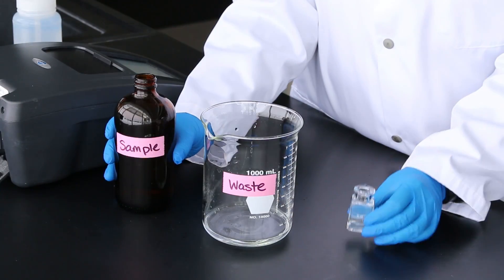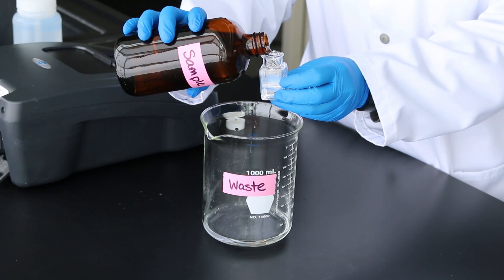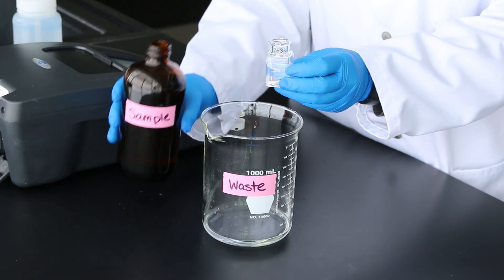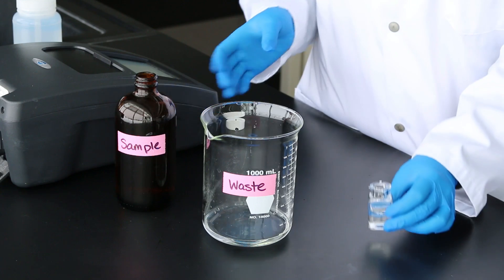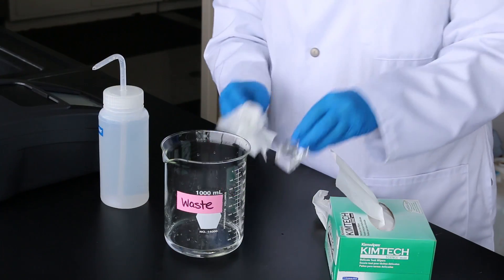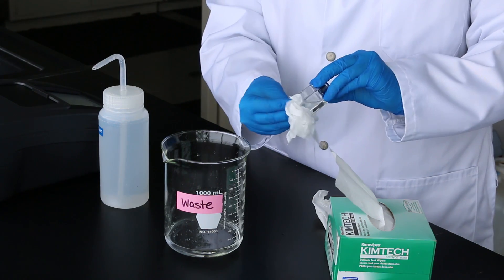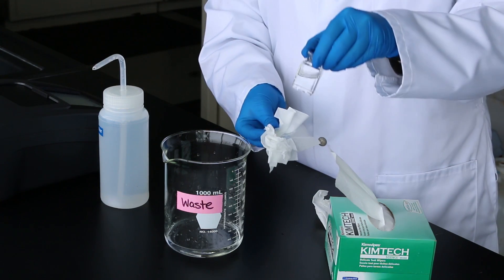To prepare the blank, rinse and fill the appropriate sample cell to the level indicated with the sample water. Ensure the outside of the cell is fully cleaned and dried to not interfere with your measurement. If the sample cell is significantly scratched, a new cell should be used as this will interfere with your readings.